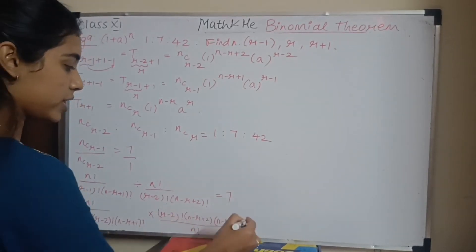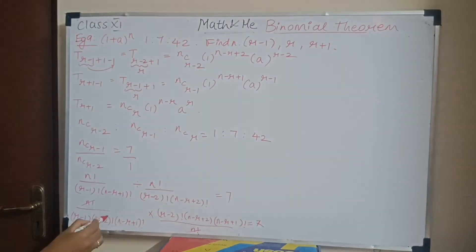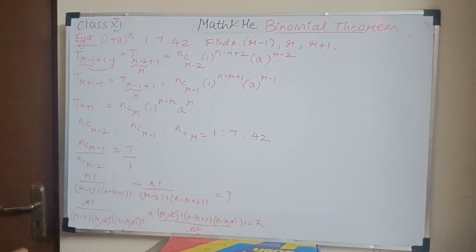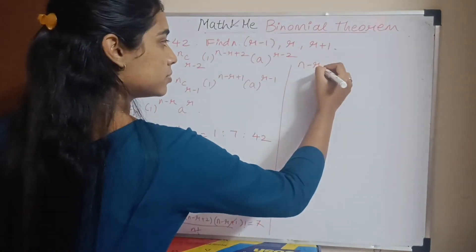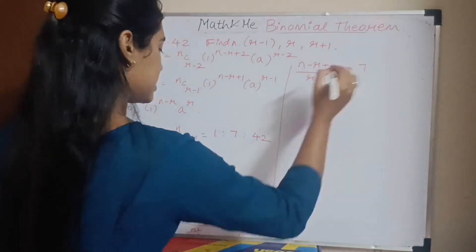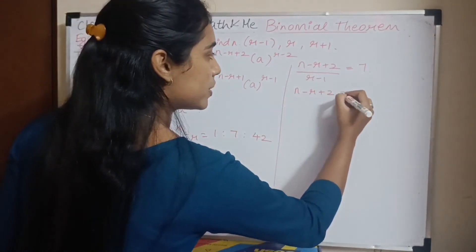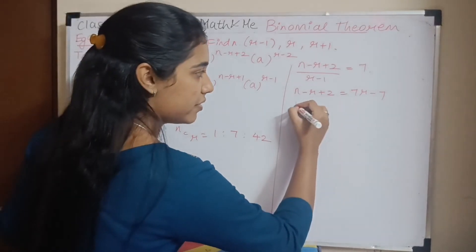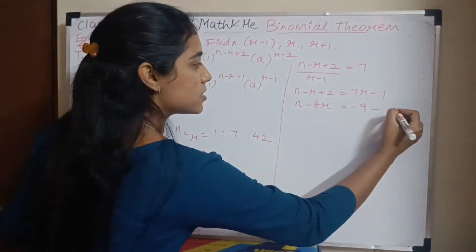After cancellation, n! and n! cancel, (r-2)! and (r-2)! cancel, and (n-r+1)! cancels, leaving (n-r+2) / (r-1) = 7. Cross-multiplying: n - r + 2 = 7r - 7, so n - 8r = -9. This is equation 1.